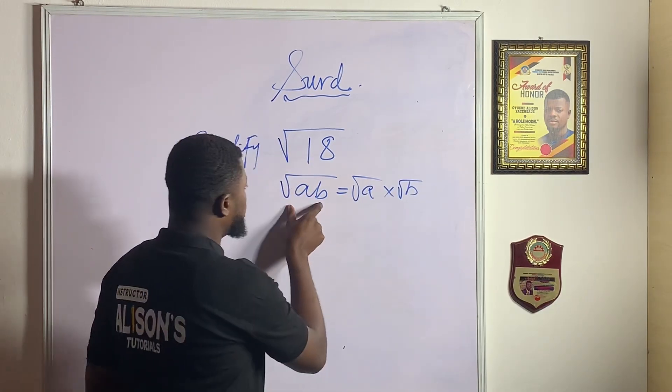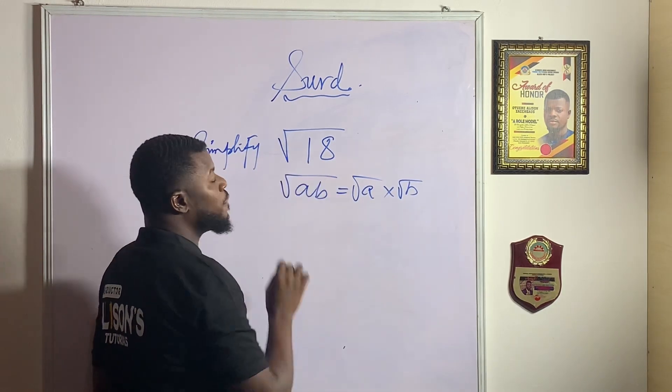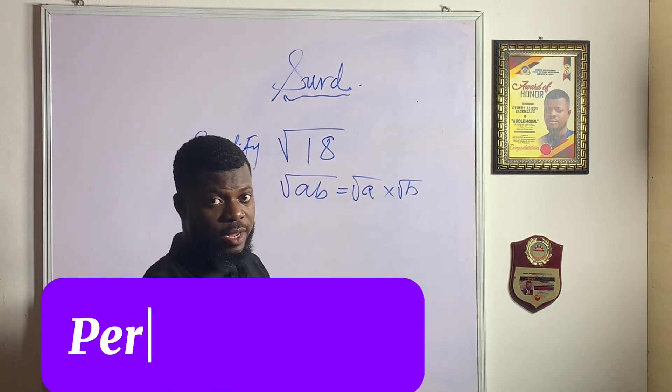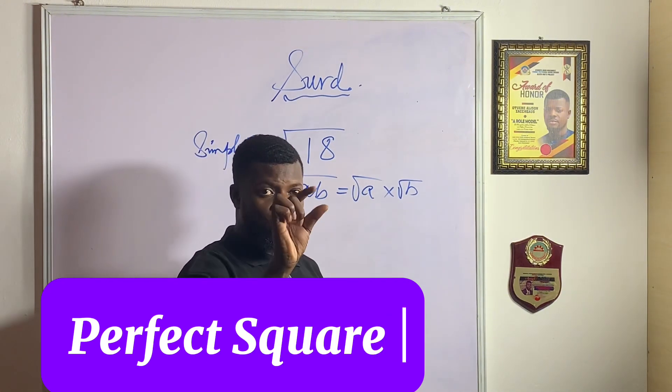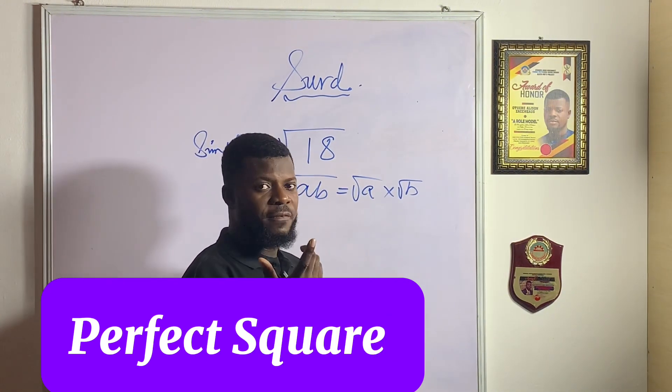So obeying this rule, then think of a perfect square. That keyword: perfect square. What is a perfect square?